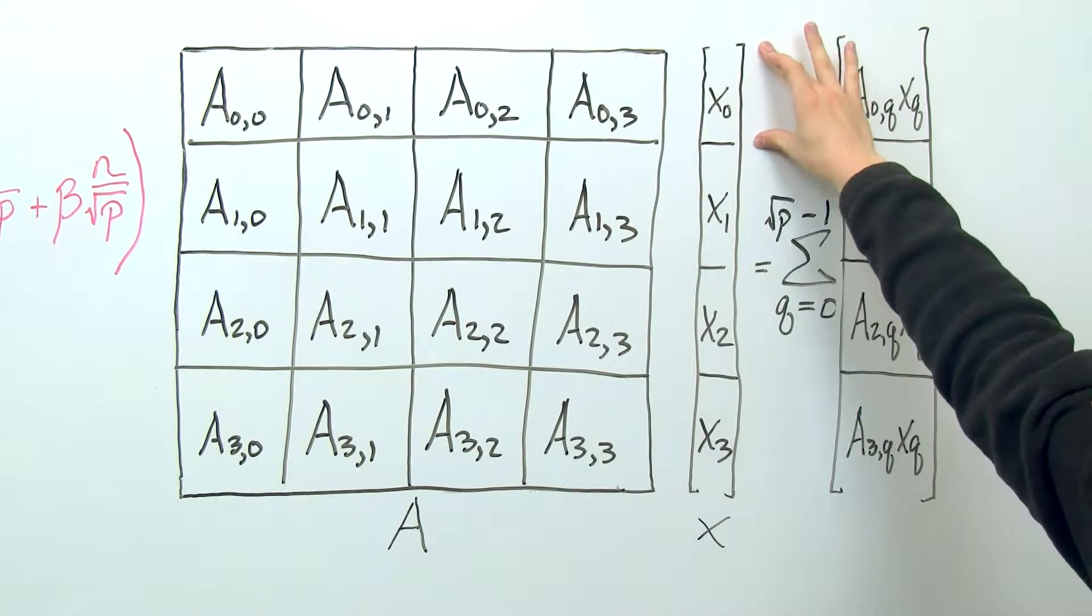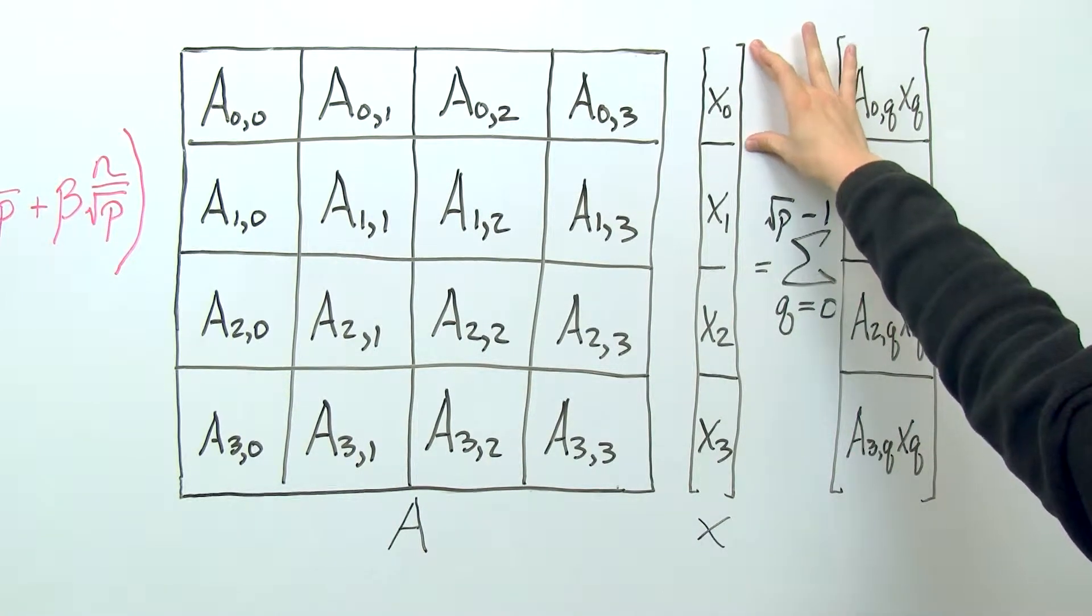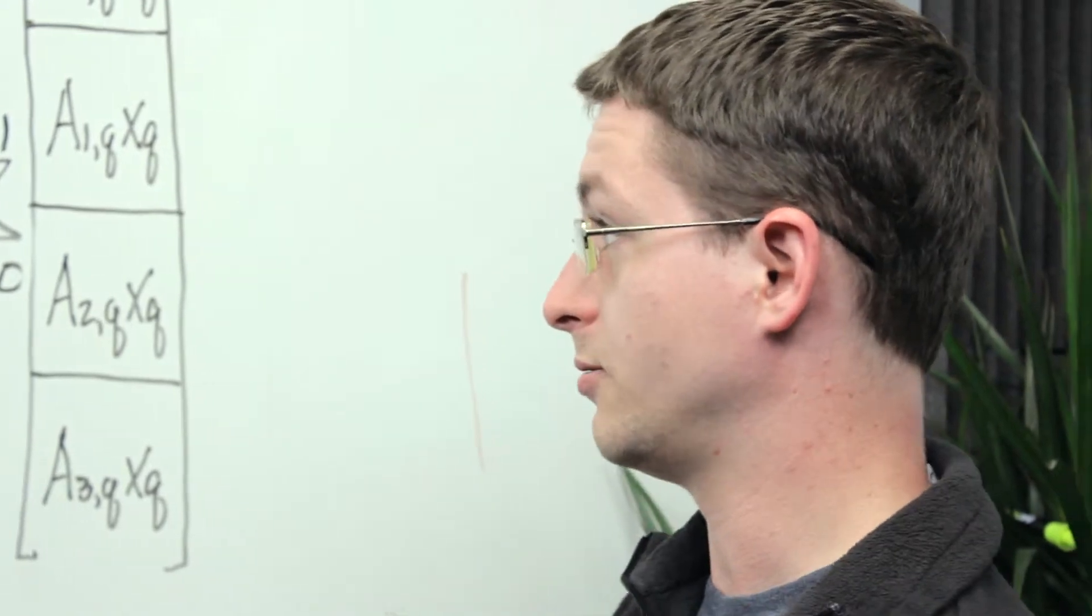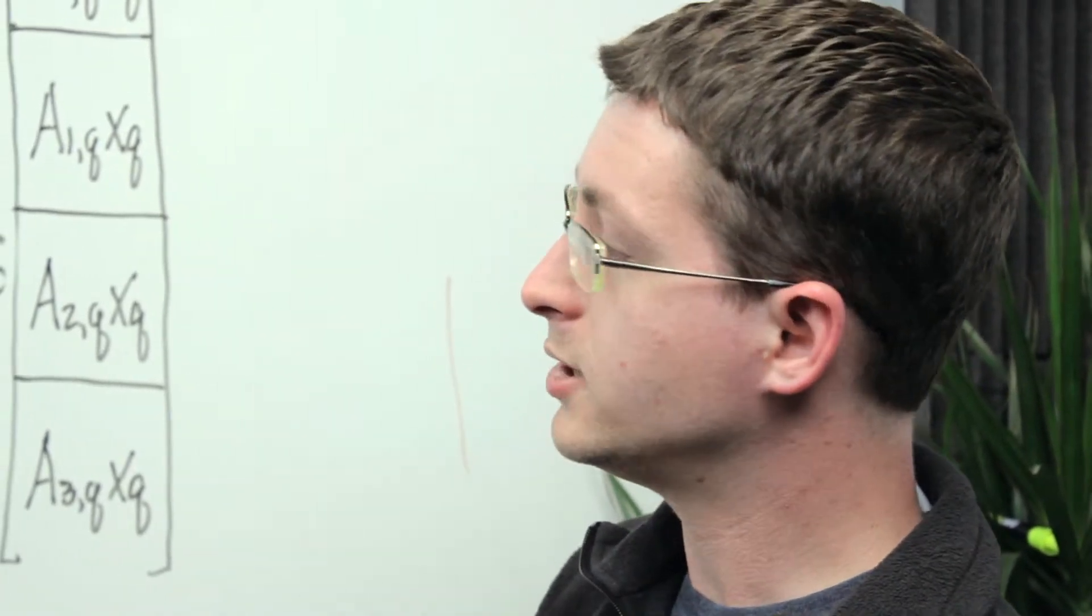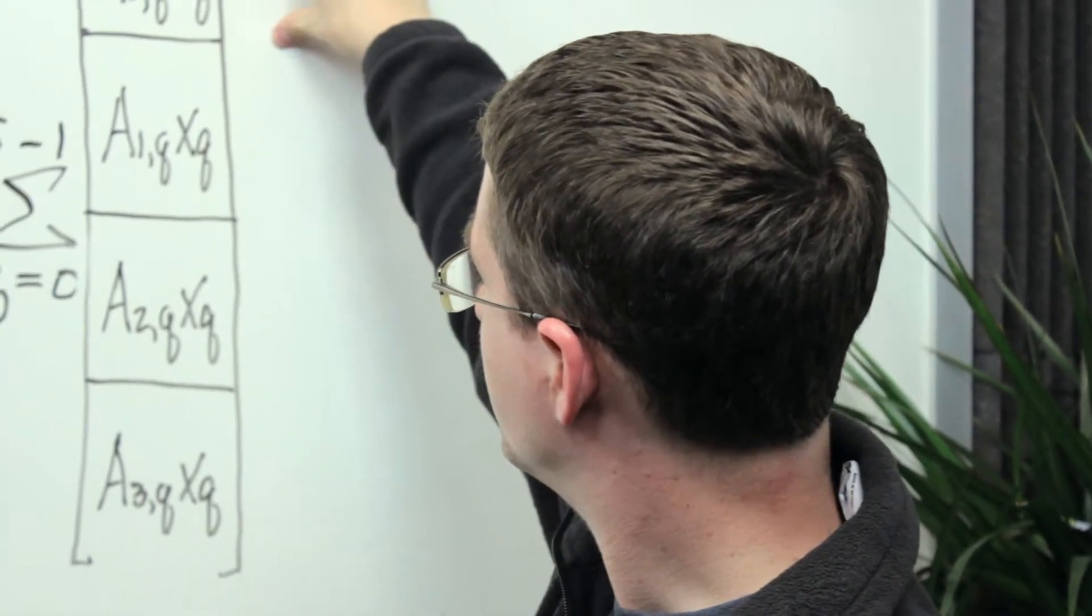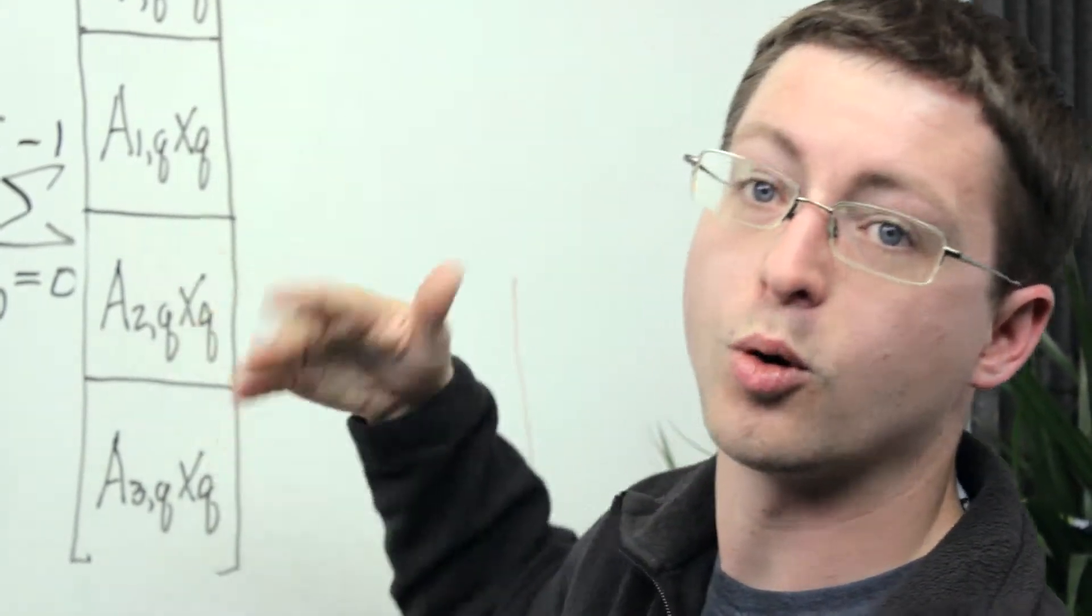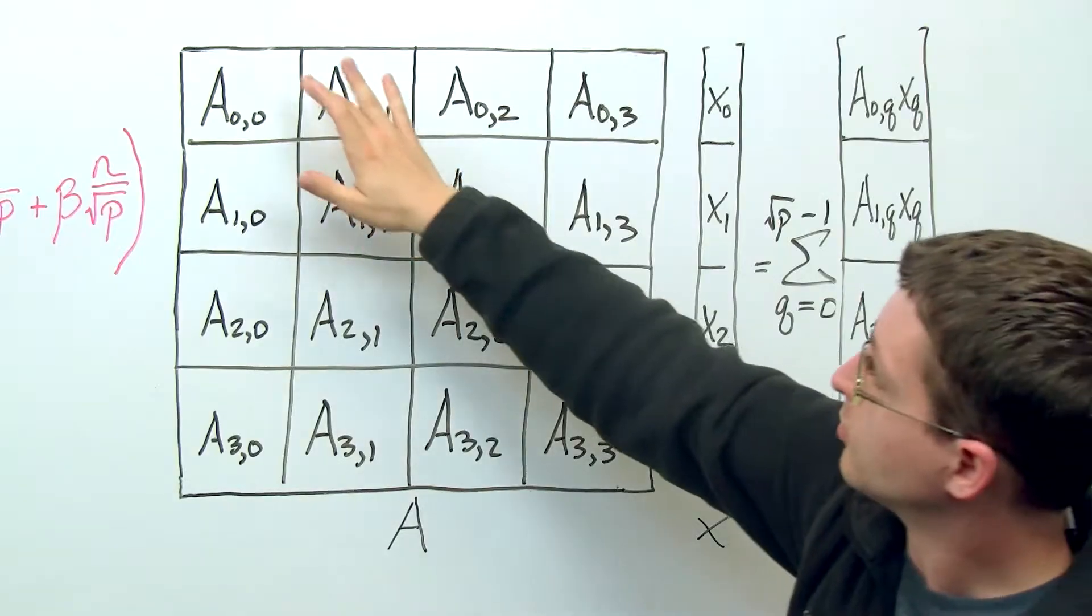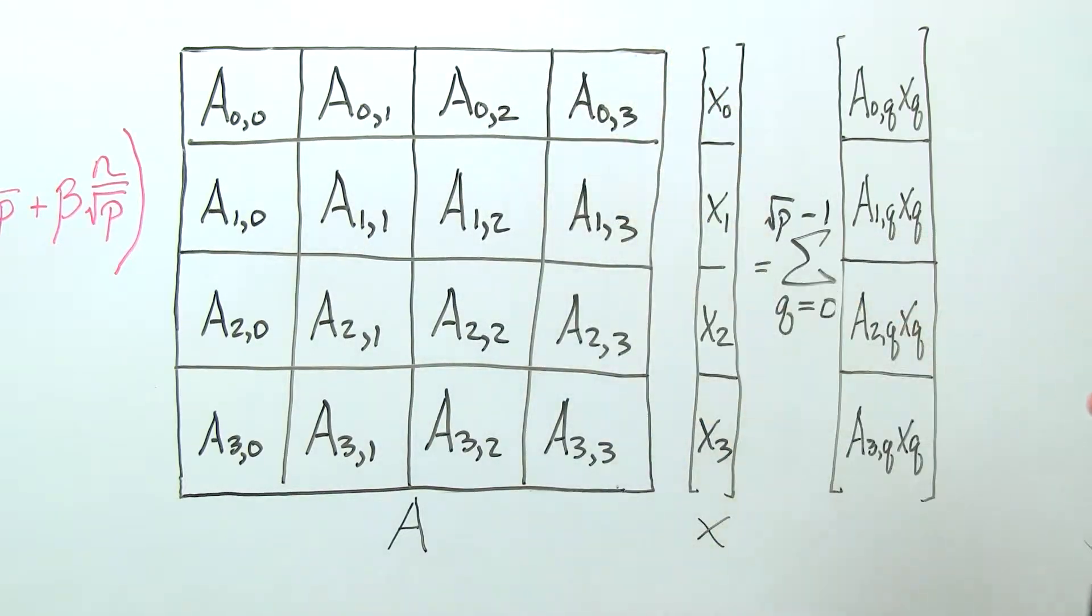So if it also had access to this portion of the matrix x, then it could locally form A0,0 times x0. And so then if it wanted to have a copy of the result of this portion of the first quarter of the full result, it would need to sum the contributions that were locally computed from each of these four processes.